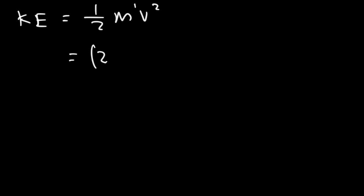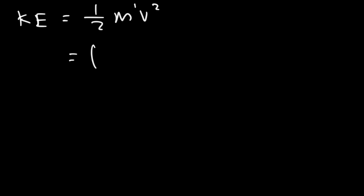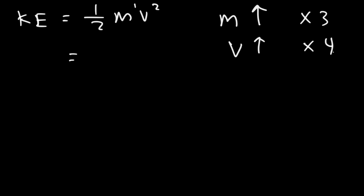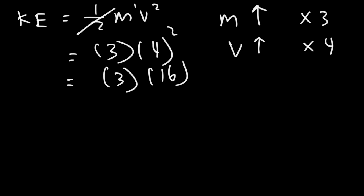What if we double the speed? We're not changing the mass, so we ignore the constant. We replace v with 2: 2 squared is 4. So kinetic energy quadruples if you double the speed. Here's another question: if you increase the mass by a factor of 3 and quadruple the speed (increase by a factor of 4), how much will the kinetic energy change? We triple the mass and quadruple the speed: 4 squared is 16, times 3 is 48. So kinetic energy increases by a factor of 48. That's a shortcut method for answering those types of problems.